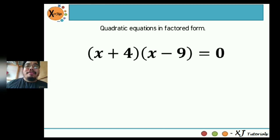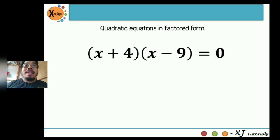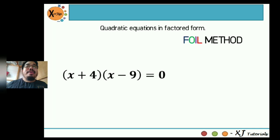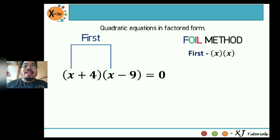For example: x plus 4 multiplied by x minus 9 is equal to zero. As you can see, these are two factors. If you are given a quadratic equation in factored form, in order to get the values of a, b, and c, you need to expand the left side of the equation first by getting the product of the two factors using the FOIL method. FOIL is a mnemonic for the standard method of multiplying binomials, where F stands for First, O for Outer, I for Inner, and L for Last. We need to get the product of the first terms of the two factors — that would be x and x — so x multiplied by itself is x squared.